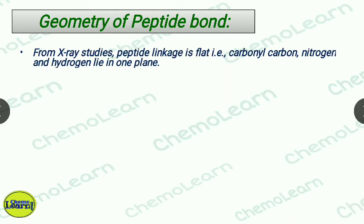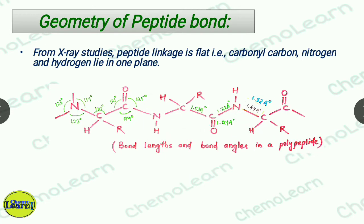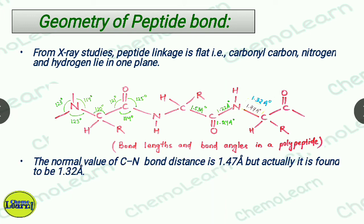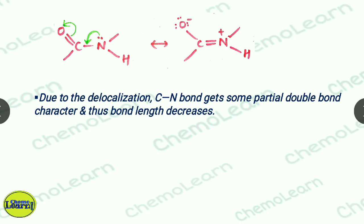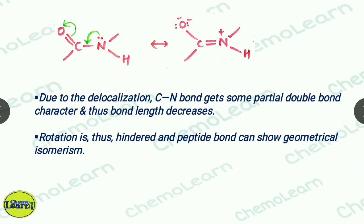Regarding the geometry of the peptide bond: X-ray studies have shown that the peptide linkage is flat, meaning the carbonyl group's carbon, nitrogen, and hydrogen are all in the same plane. The bond angle and bond length of peptide bonds: the C-N bond length is 1.32 Angstroms, whereas it should be 1.47 Angstroms. It is shorter because of resonance and delocalization — delocalization of electrons between nitrogen, carbon, and oxygen gives the C-N bond a partial double bond character, which decreases its bond length.